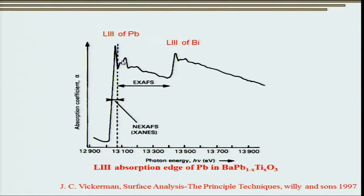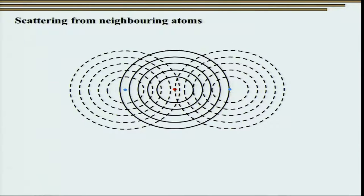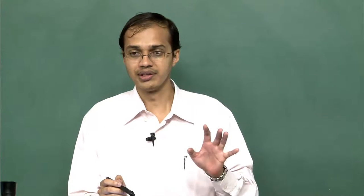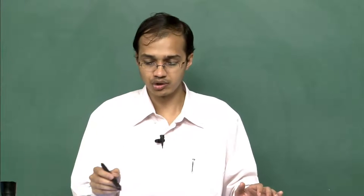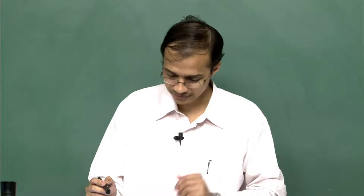All these oscillations contribute to the pattern. Here we see an atom emitting electron waves. The moment they interact with another atom, they are back-reflected and back-scattered. The propagating and back-reflected waves interfere: constructive interference gives high intensity and destructive interference gives low intensity, and this leads to the oscillations seen in the EXAFS spectrum.